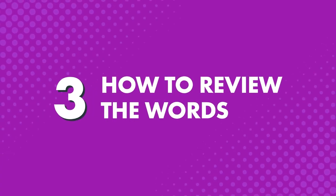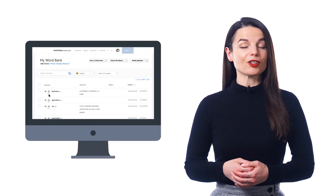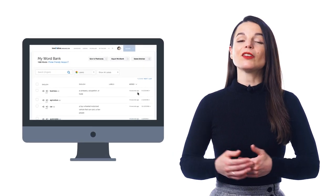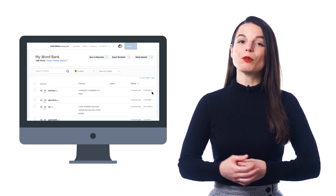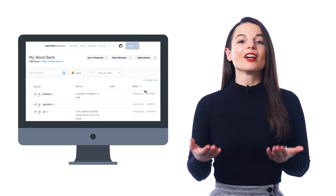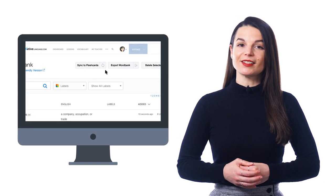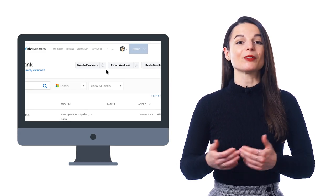Three, how to review the words. Once you save the words to your word bank, you can easily see all of them, all in one spot. With every word or phrase, you get the audio pronunciation, the translation, and even the related lessons where they're introduced. That way, you can review the words one by one. If you'd like to study words with flashcards, just click on sync to flashcard deck. This will create a flashcard deck of your word bank entries for you to study.